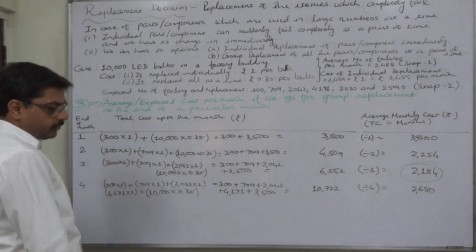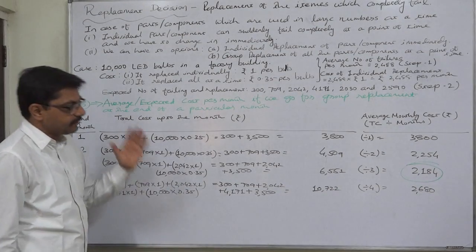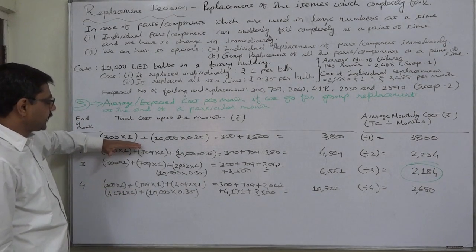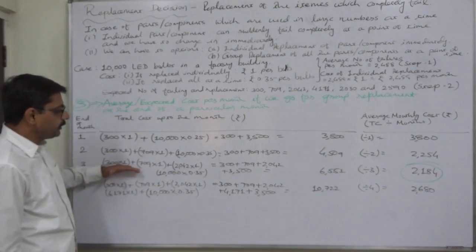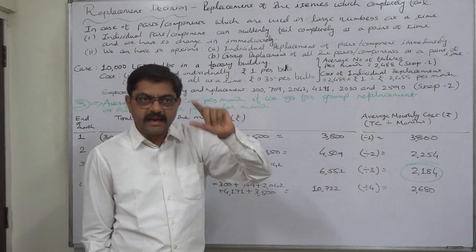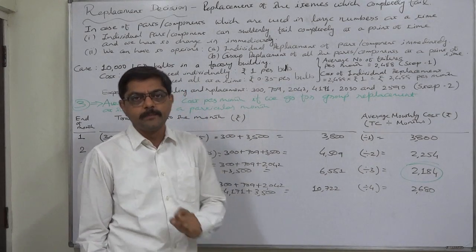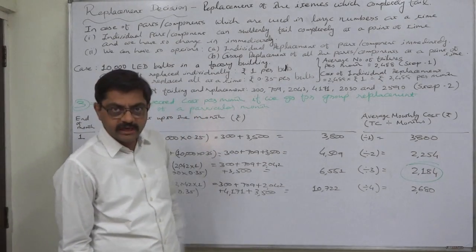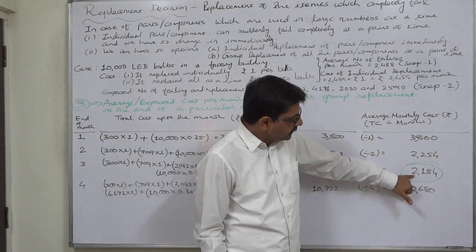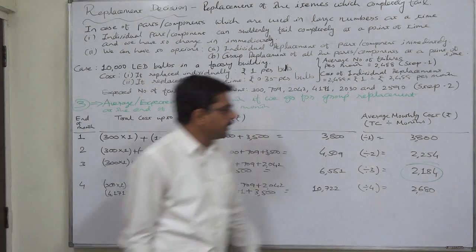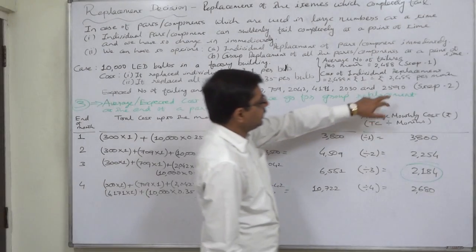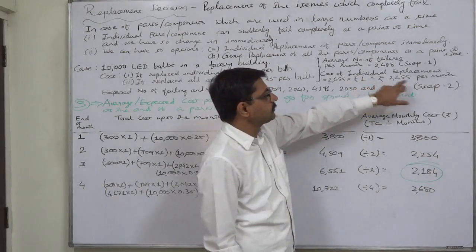Since the monthly average cost has started to increase at month four, it is not advisable to wait until the end of the fourth month for group replacement. It is advisable for the company to replace failing bulbs individually in months one, two, and three, and at the end of the third month go for group replacement of all 10,000 bulbs — repeating this every three months. The average monthly cost will then be minimum at rupees 2184. If the company never does group replacement, the long-term monthly average is rupees 2488.